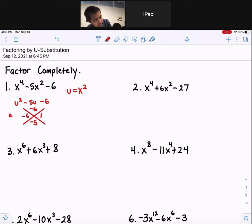Now again, since a is equal to 1, notice the coefficient in front of this u squared is 1. Then we just use these for our factors: u minus 6 times u plus 1.